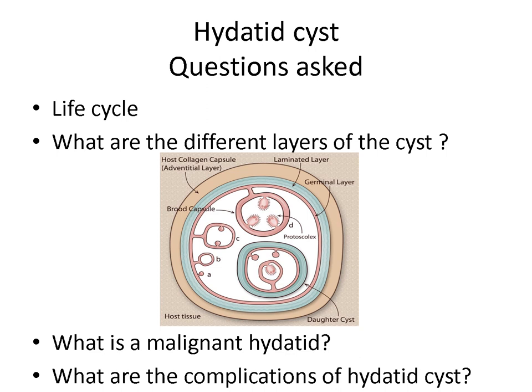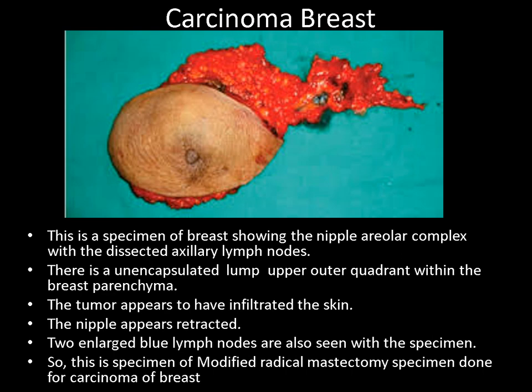This is again a very common specimen. This is a specimen of breast showing the nipple-areola complex along with the dissected lymph nodes. There is a mass in the upper outer quadrant within the breast parenchyma. The skin overlying the tumor looks infiltrated. Also the nipple is retracted. There are enlarged lymph nodes seen in the axilla of the specimen.